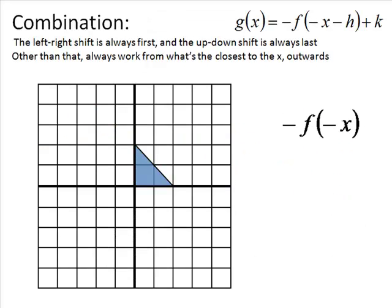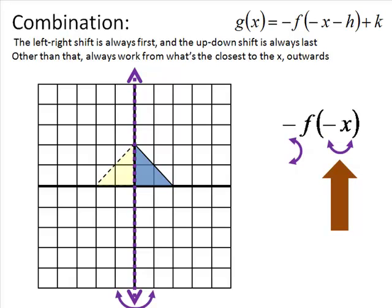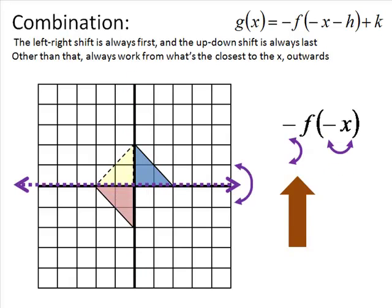For example, say we had negative f of negative x. We don't have any shifts to worry about, so we just start working from closest to x outward. Inside we have a left-right flip, then working outward we have an up-down flip. So we do the left-right flip first, and then the up-down flip. The red triangle is the final position of negative f of negative x. These are shapes rather than functions, but shapes make the transformations easier to see.